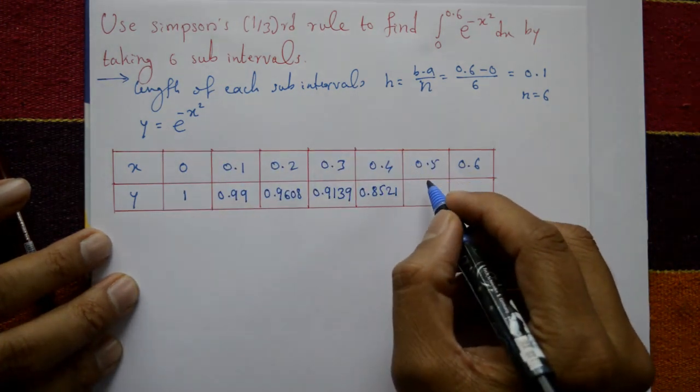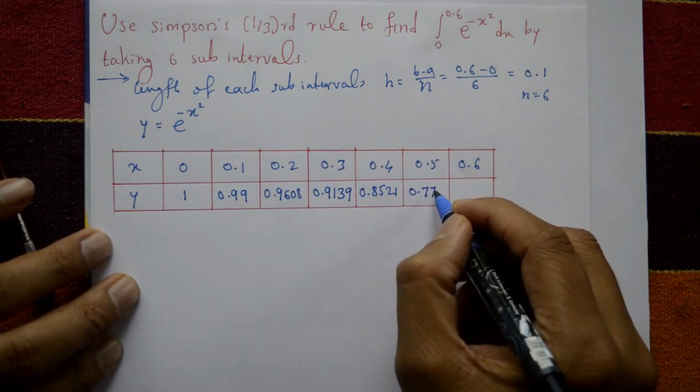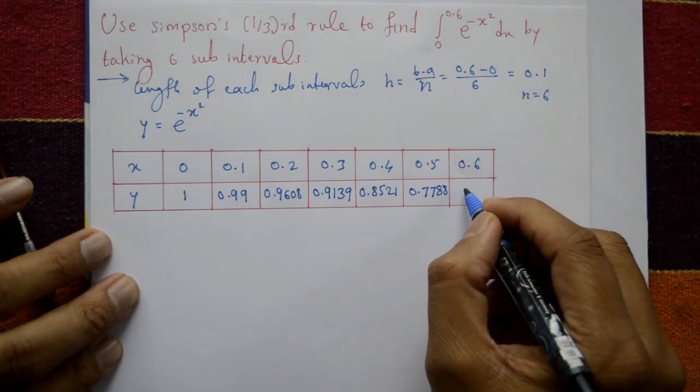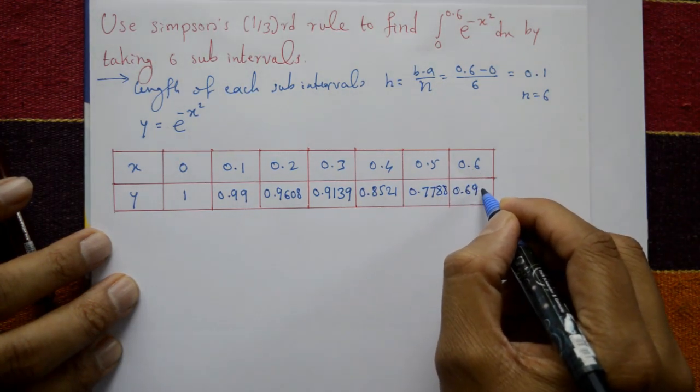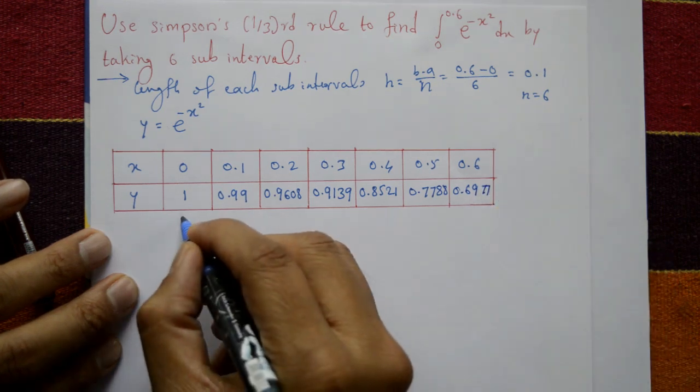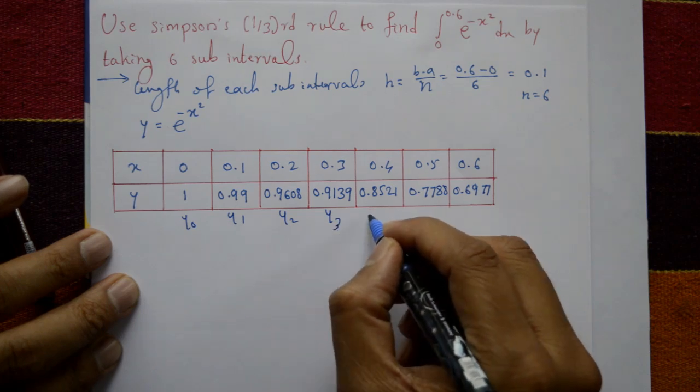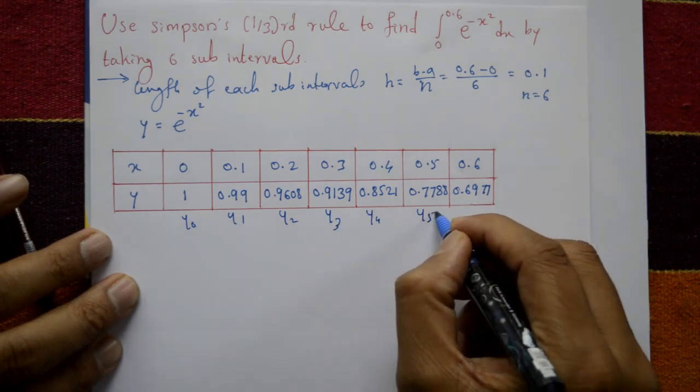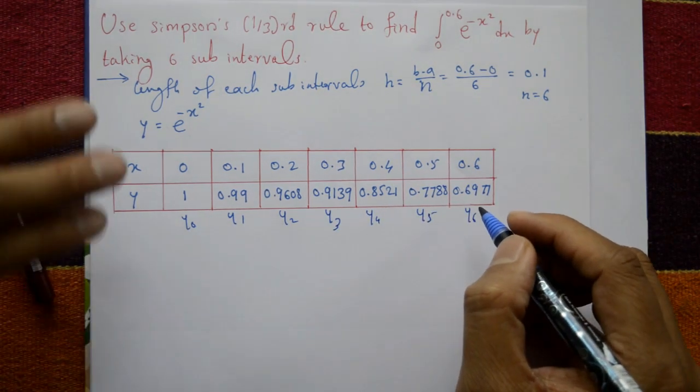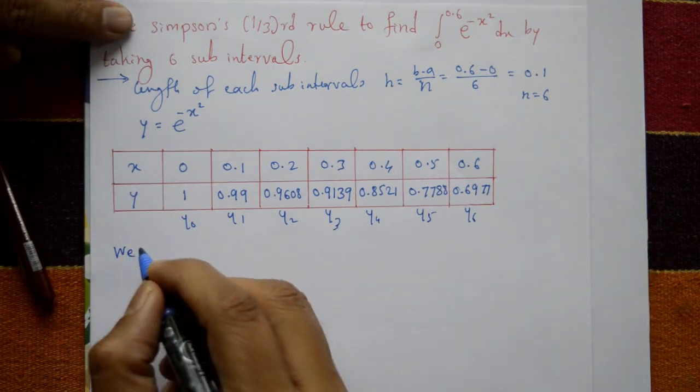x = 0.5 gives 0.7788. Last one, x = 0.6 gives 0.6977. This gives us y0, y1, y2, y3, y4, y5, and y6.